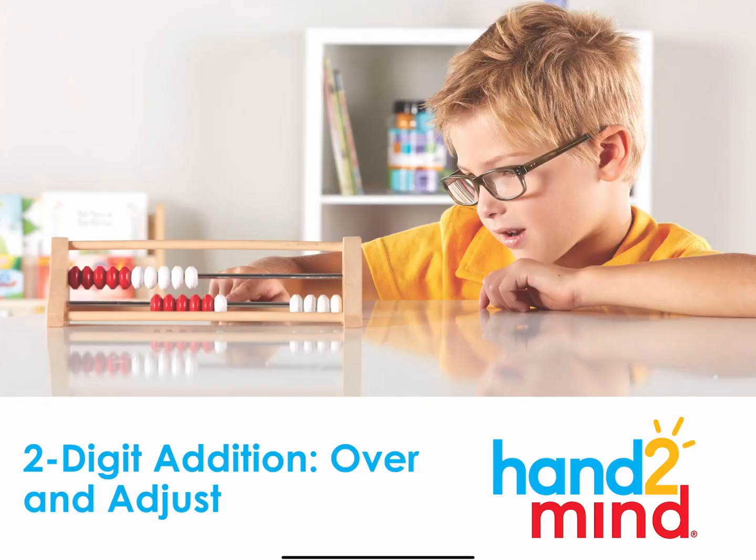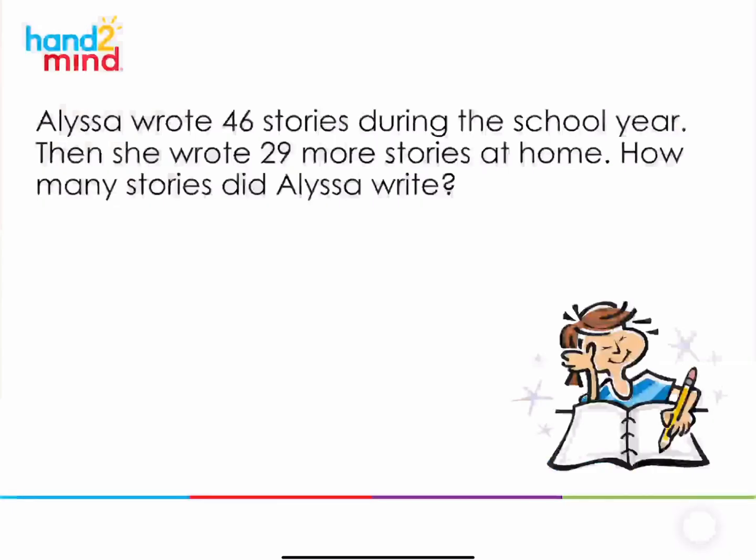So today we're going to begin by looking at a situation so that we can use a strategy that might make it easier to solve the problem. So here is the situation we're going to look at. You can follow along with me or you can read it as well while I'm reading it. It starts like this. Alyssa wrote 46 stories during the school year. Then she wrote 29 more stories at home. How many stories did Alyssa write? So as a mathematician, the first thing we want to do is ask ourselves who or what is this about?